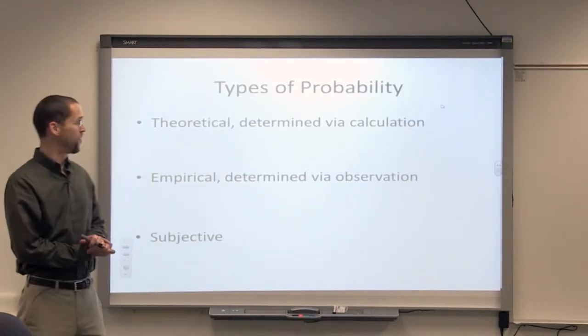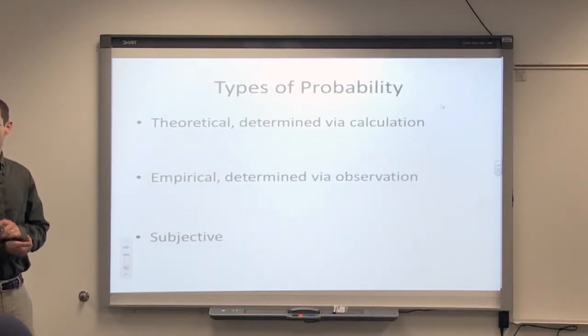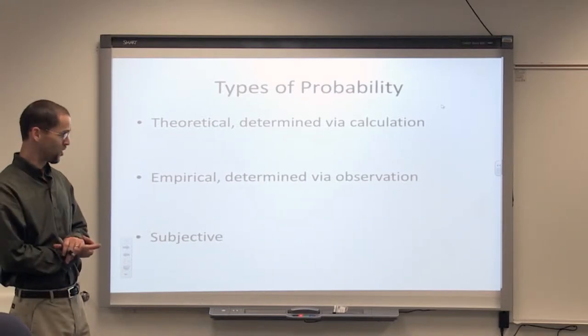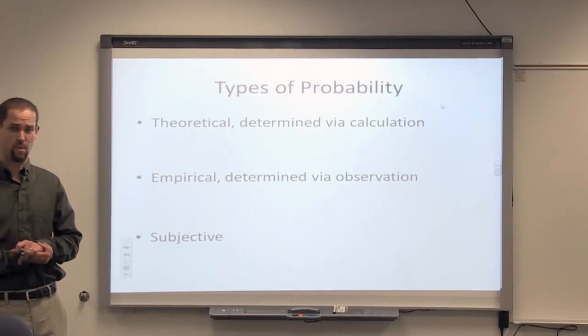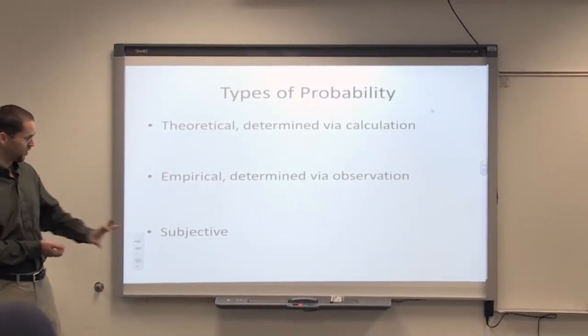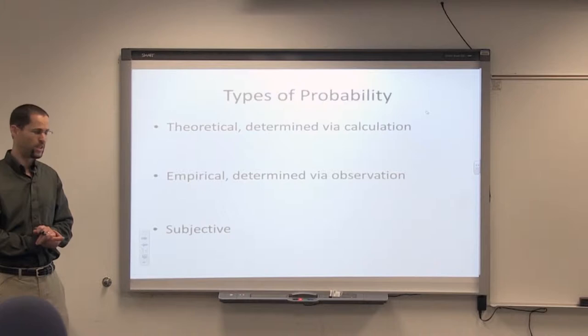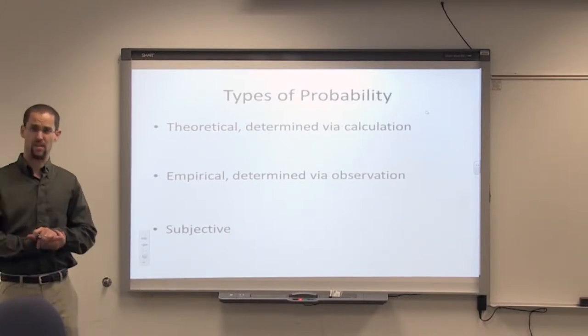Types of probability. We have theoretical probability, and we have empirical or determined by observation kind of probabilities, and then we have subjective probabilities. We won't spend a lot of time on subjective probability. We'll spend most of our time on the first two.